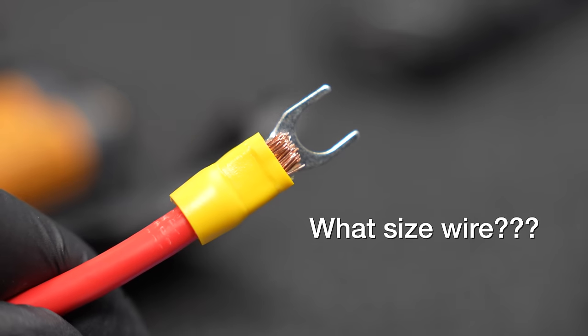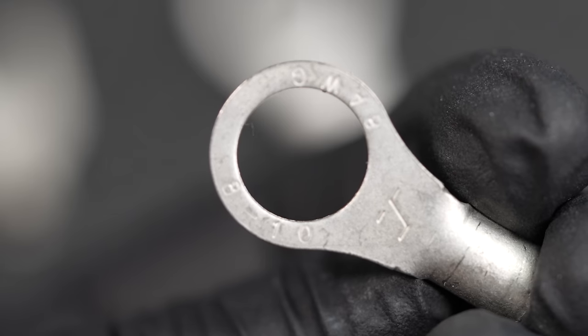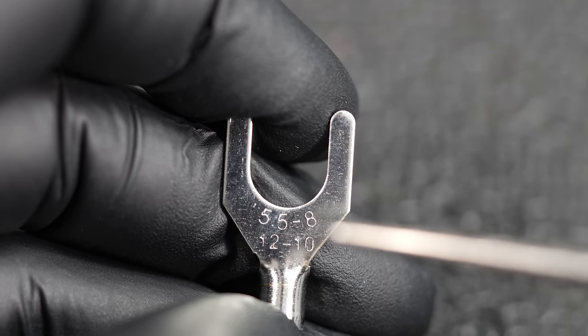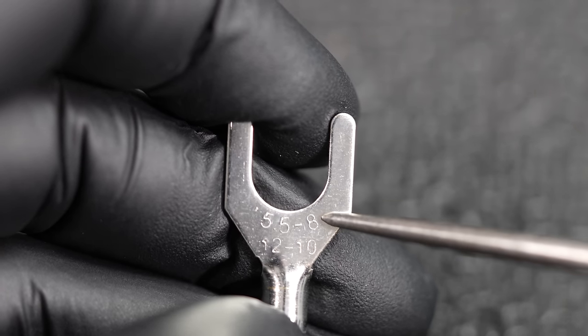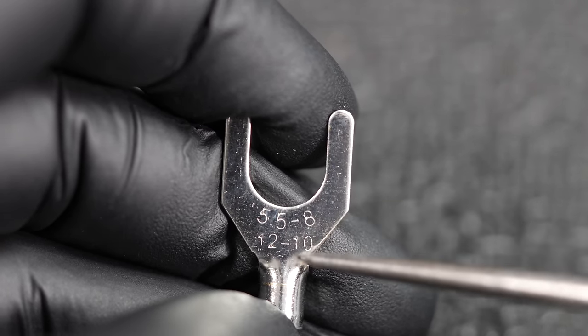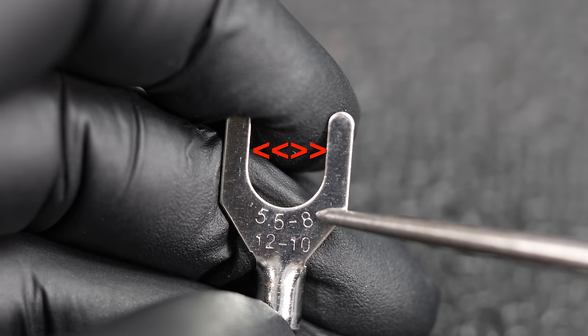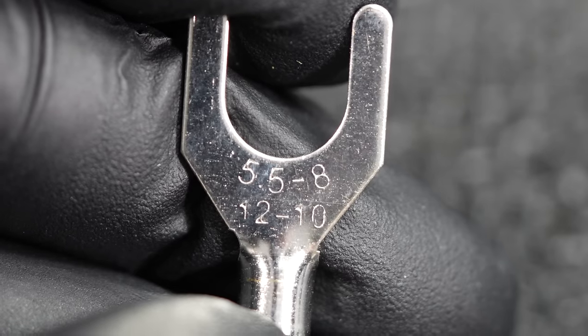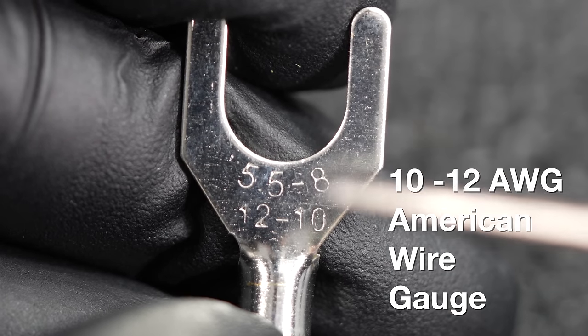The other big mistake people make is they're using the wrong size wire and the wrong connector. Look on the back of each one of these crimp connectors and you will see two different stamped numbers. That first 5.5-8, that's indicating in millimeters the size of the opening. The second number 10-12 is the wire gauge size that the connector is rated for.